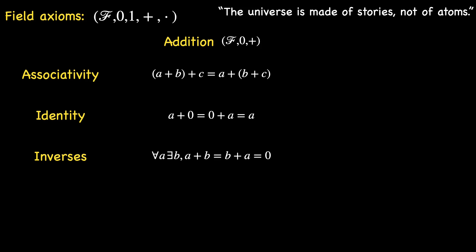It's not challenging to prove that the identity element is unique. And for every number A, its inverse is also unique. This uniqueness allows us to denote the additive inverse of A as negative A.